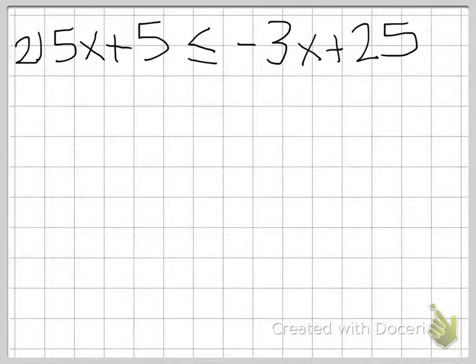So here is our second equation on the classwork. It's 5x plus 5 is less than or equal to negative 3x plus 25. Now, it looks very similar to number 1. The only difference is that our inequality sign is in a different spot, so it's between our 5 and our negative 3x. So we're still going to solve it the same and we have to combine our like terms. So we have to combine our x, our terms with the x's, and then we have to combine our terms without the x's.